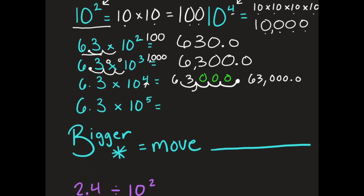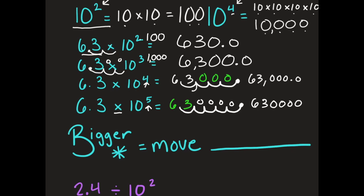Last, I have 6 and 3 tenths times 10 to the fifth. I'm getting bigger by 5, moving that decimal point 1, 2, 3, 4, 5 times. Fill in with zeros and if we rewrite it: 6, 3, 0, 0, 0, 0 — so 630,000.